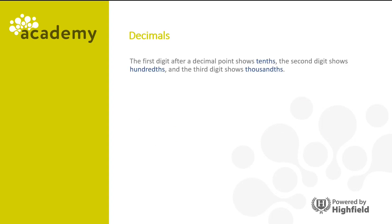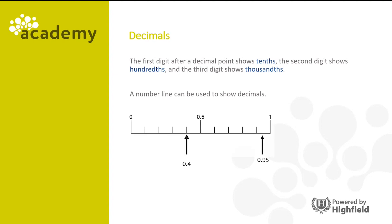The first digit after a decimal point shows tenths, the second digit shows hundredths and the third digit shows thousandths. A number line can be used to show decimals. Here's an example of one. The first arrow there shows 0.4. It's worth noting that you should read this as nought point nine five, not zero point nine five.